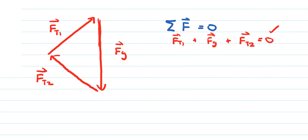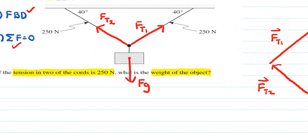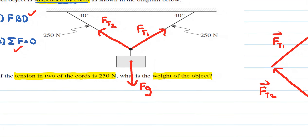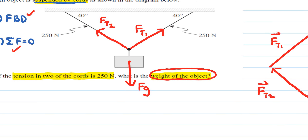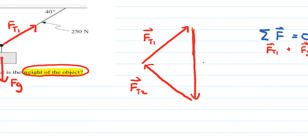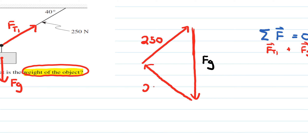Let's go ahead and start labeling the triangle with numbers. We need to find the weight of the object, so I'll label the force of gravity side as FG. The force tension in each rope is 250 newtons, so I'll label both of those sides as 250 newtons.